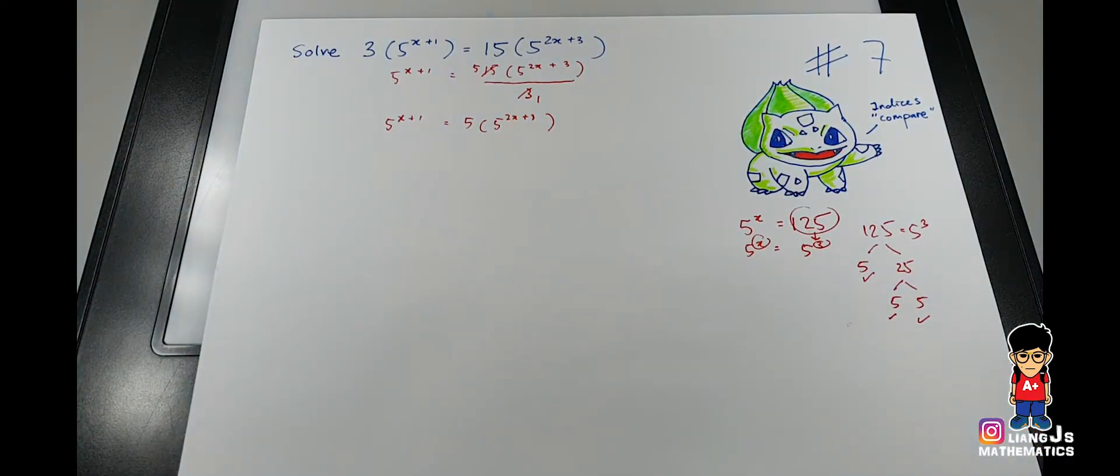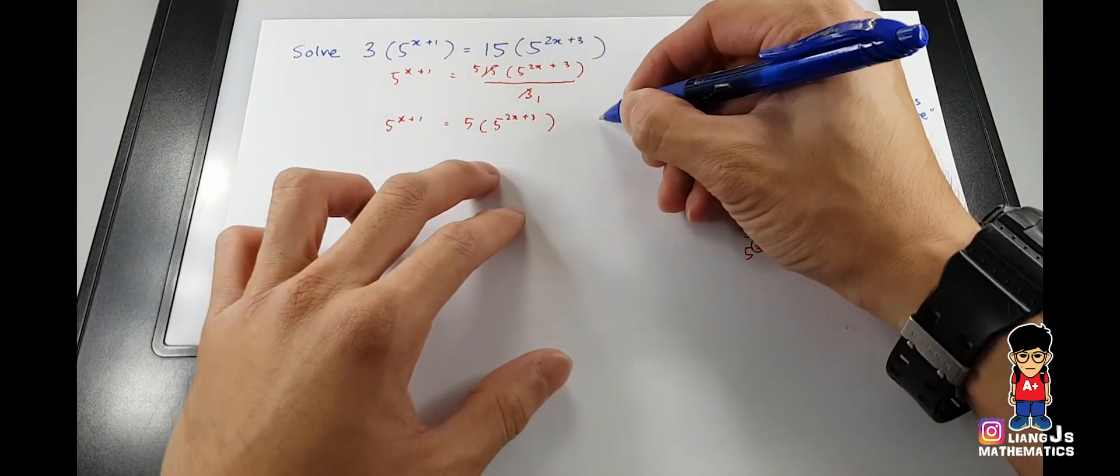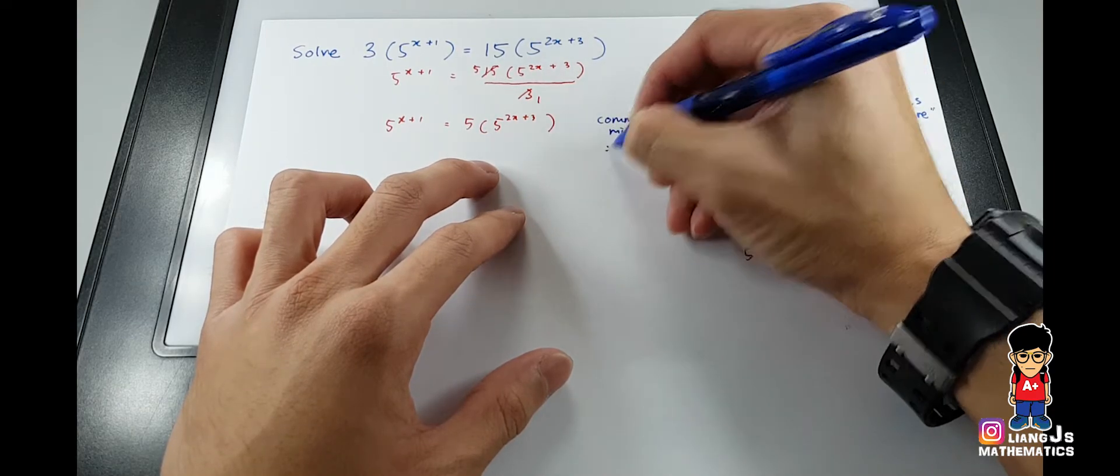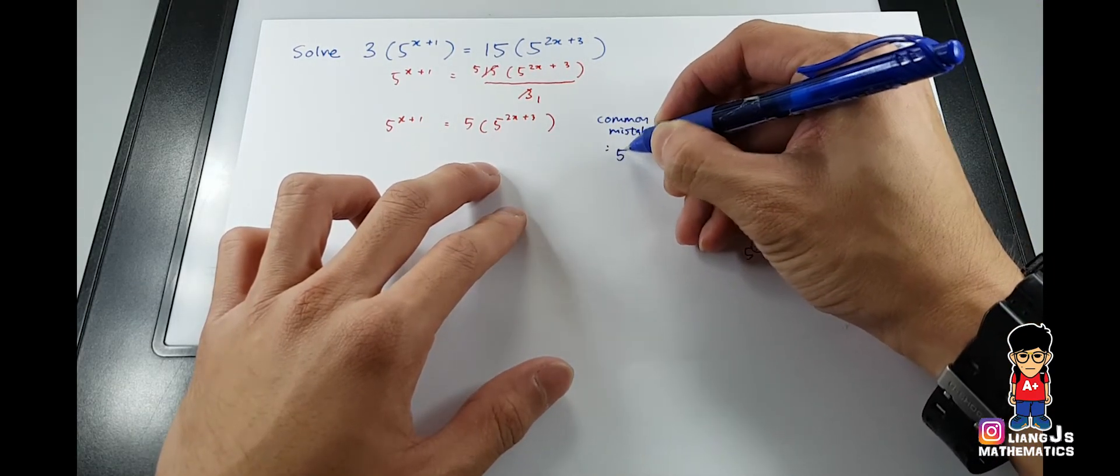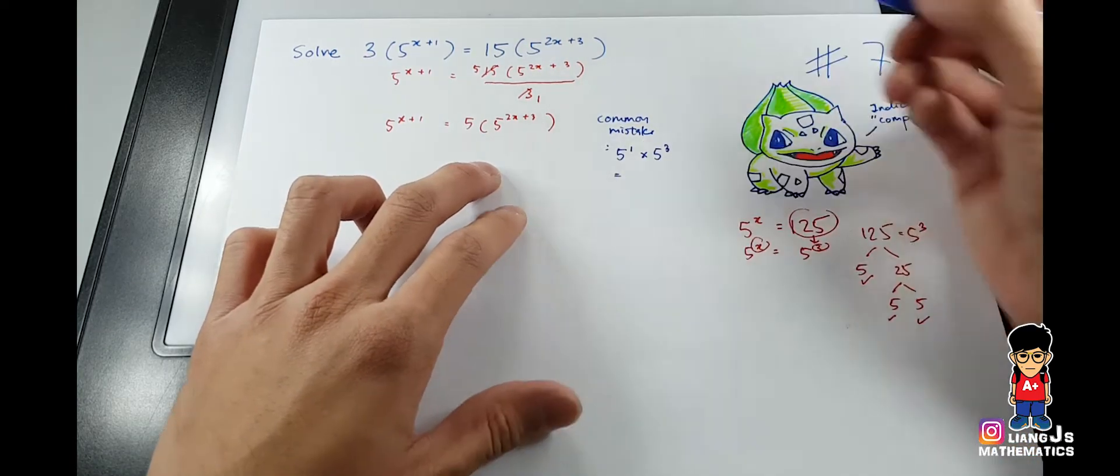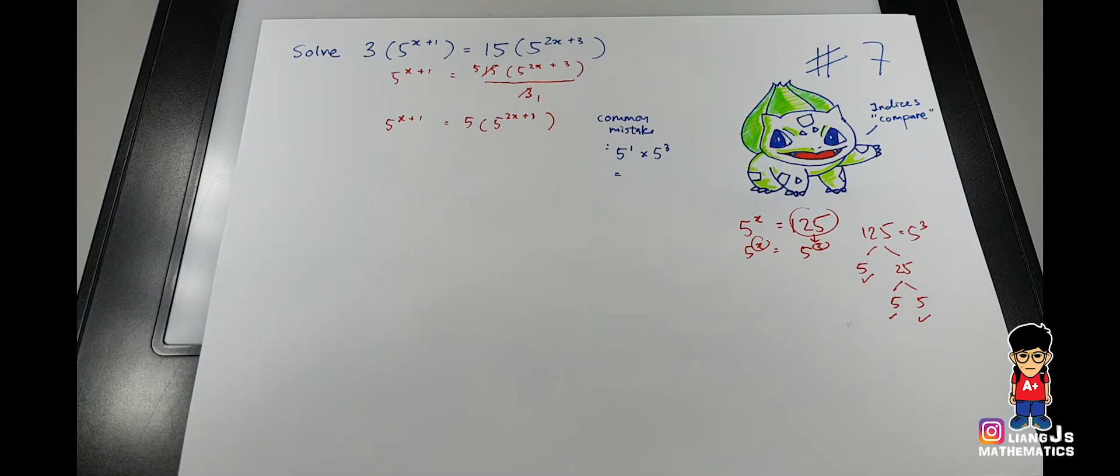Okay, so now there is a few common mistake that I will show you. One, the first thing is okay I write here like common mistake. So the first common mistake I want to show you will be okay number one: how if I say 5^1 times with 5^3.